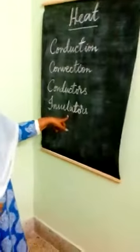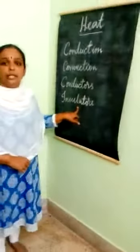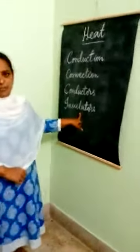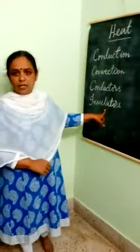Insulators are those materials which do not allow heat to pass through them. Examples of insulators are plastic and wood.